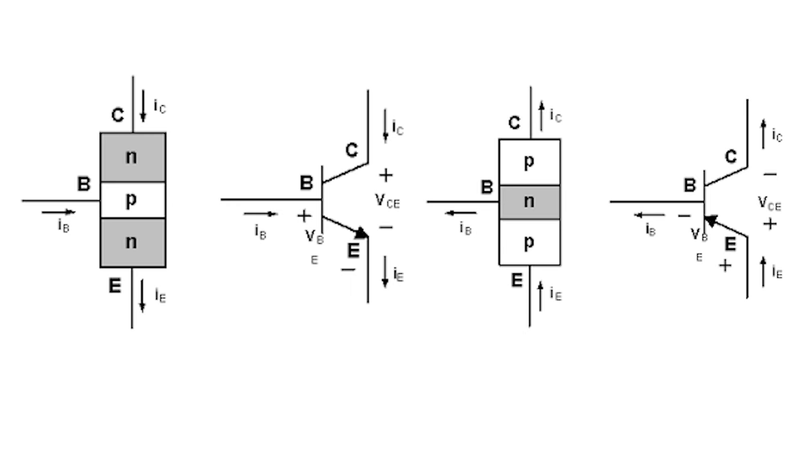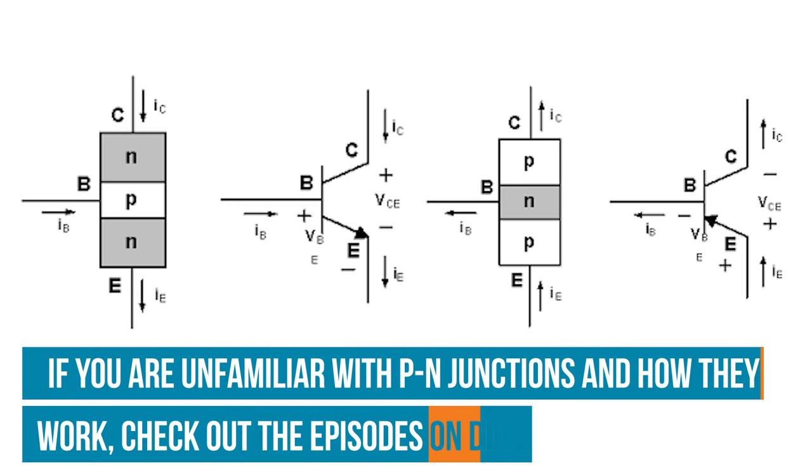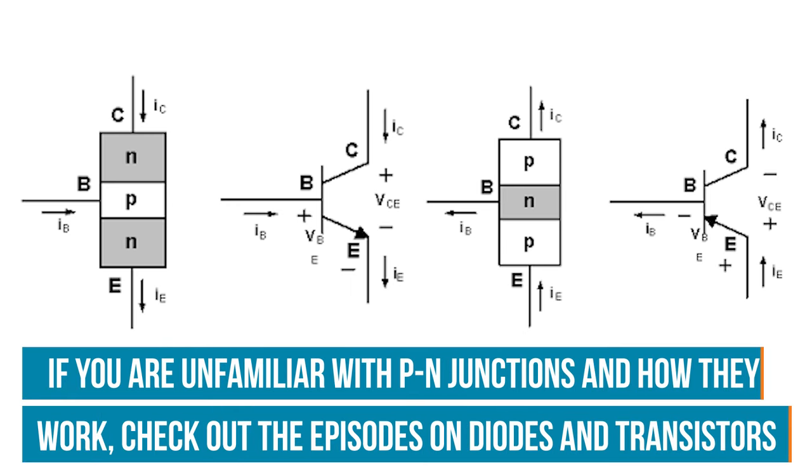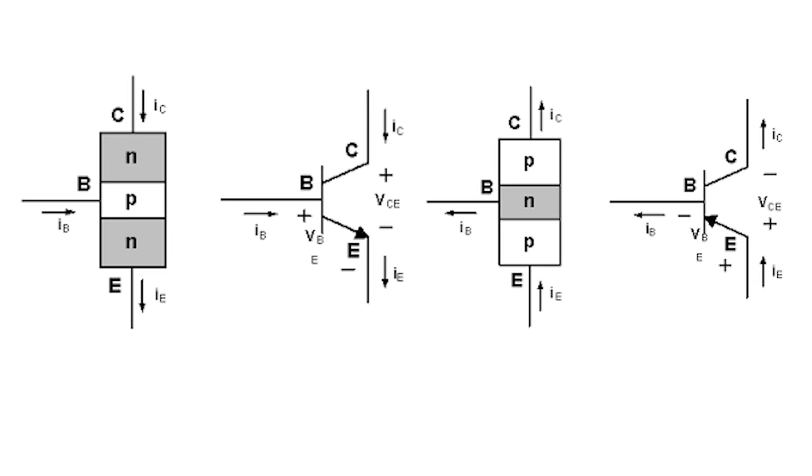While BJTs have a linear structure with two PN junctions and are either NPN or PNP, JFETs and MOSFETs have PN junctions configured in a way that gives them their unique characteristics and functions.